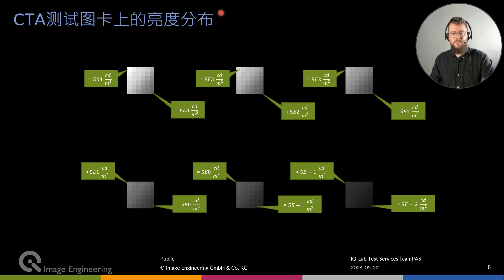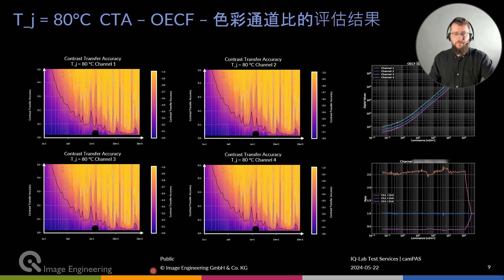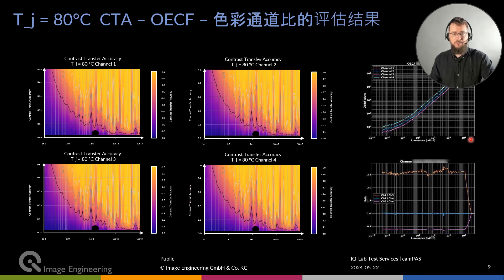We capture images at different temperatures. For example, here we measured the camera at a sensor junction temperature of 80 degrees C. We measured the CTA for each color filter array and can see there is slight variation between the channels, which is expected. We can also directly generate an OECF — the optoelectronic conversion function — and check if the channel ratios are linear over the whole luminance range, which is often not the case. In this case, we can see this is an HDR sensor and there is some kind of drop where there is a misalignment between the channel ratios.